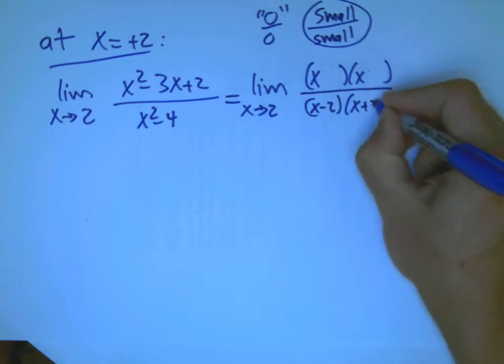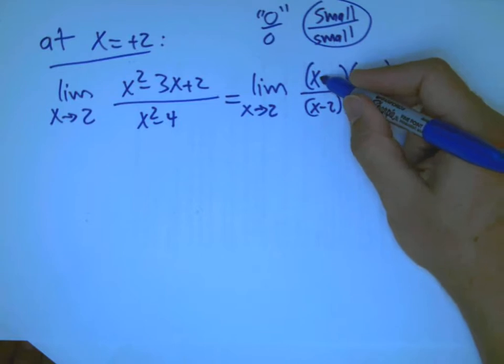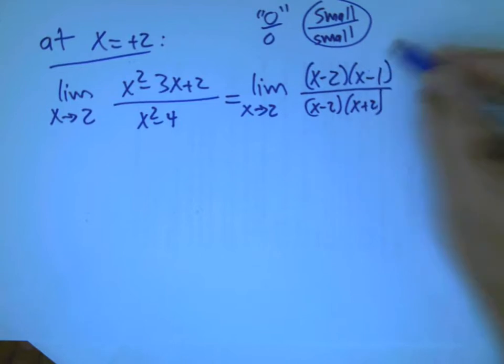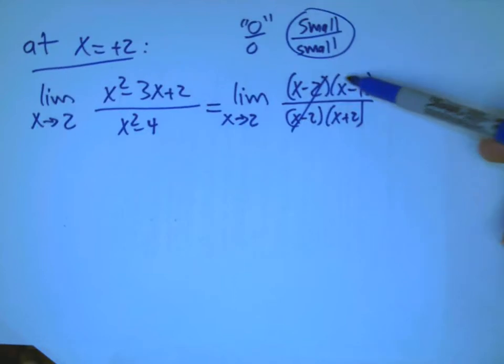And the way we do that with rational functions is we factor and cancel, if that's at all possible. The bottom's easy to factor, because it's the difference of squares. The top's not much harder. X minus 2, X minus 1, and voila, there is a cancellation.